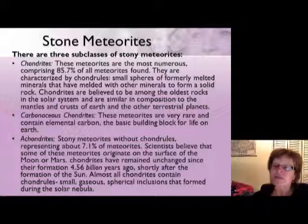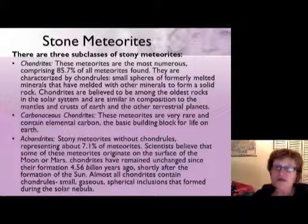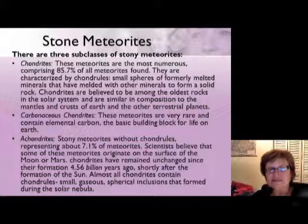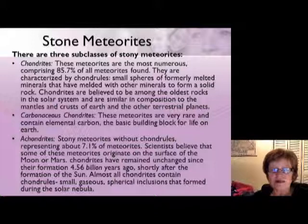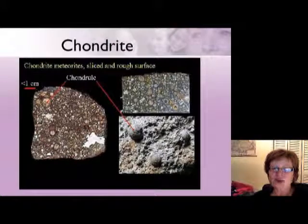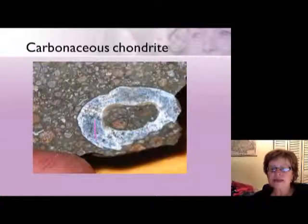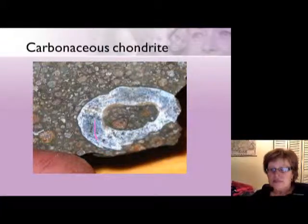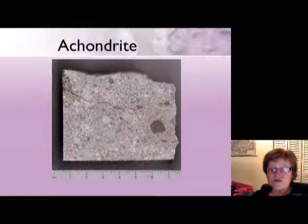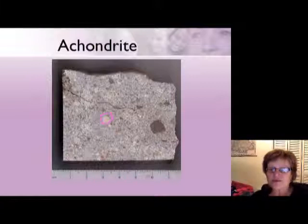Just about every meteorite has small spherical inclusions that formed during the solar nebula. The chondrite meteorites have many chondrules, visible in the slide as small pea-like structures. The carbonaceous chondrite shows a white area containing carbon, which is very important. The achondrite shown here does not have chondrules — it may have some spherolites, but the characteristic chondrules are absent.